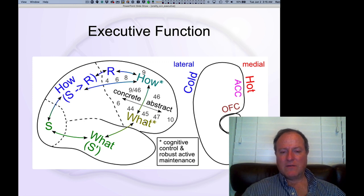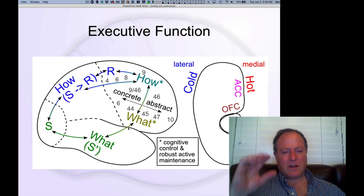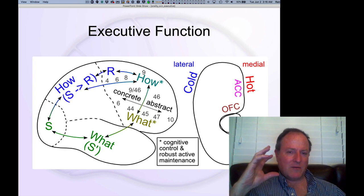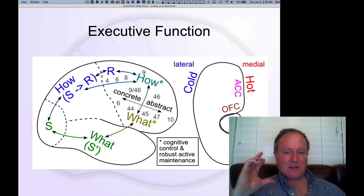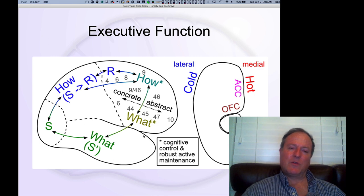Interestingly, in the ventral areas of prefrontal cortex, we know that those are more directly interconnected anatomically with the temporal lobe, and they may be more important for kind of top-down control and executive maintenance of kind of language information, semantic knowledge, things that are represented in the temporal lobes as opposed to in the parietal lobes.